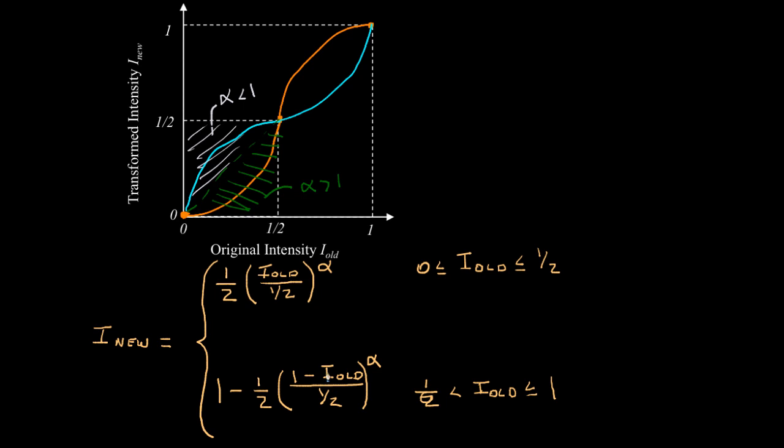Now, let's see what happens. When the input intensity is 1, this quantity is 0, so the output will be 1. That gives us that location.